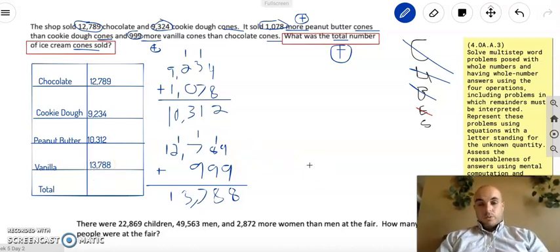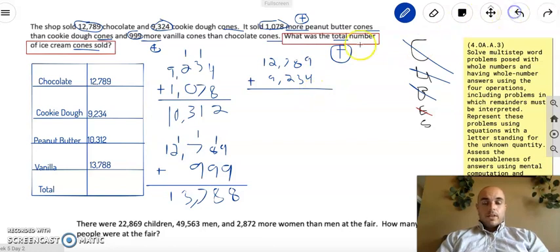So now we have to find the total, which means you have to add all of these numbers up. So I'm going to start with our 12,789. It's going to be a big number. 9,234. And I'm going to add them. OK. 9 plus 4 is 13, carry the 1. 1 plus 8 is 9, plus 3 is 12. Carry the 1. 1 plus 7 is 8, plus 2 is 10. Carry the 1. 1 plus 2 is 3, plus 9 is 12. Carry the 1. 1 plus 1 is 2. OK. So I have added chocolate and cookie dough. So let's add peanut butter next.